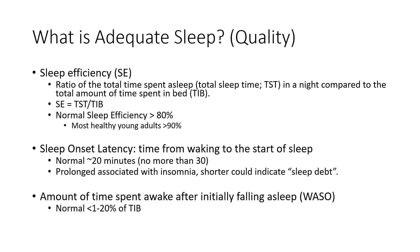Another metric is sleep onset latency — the time from lying down to the start of sleep. It should take about 20 minutes, no more than about 30 minutes to fall asleep, going from waking to that first stage one of NREM sleep. When it's prolonged, this could be associated with insomnia. If you just can't fall asleep, we think process S and process C may be involved — that balance is just not there.